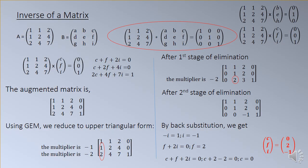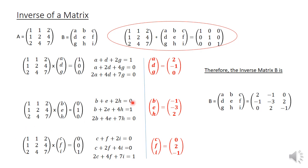Repeating the same procedure for the third column gives c = 0, f = 2, i = -1. Now we have all three column matrices of the inverse: [a, d, g] = [2, -1, 0], [b, e, h] = [-1, -3, 2], and [c, f, i] = [0, 2, -1]. Therefore, the inverse matrix B is [2, -1, 0; -1, -3, 2; 0, 2, -1]. Once you determine the inverse, verify by multiplying A times B to confirm you get the identity matrix.